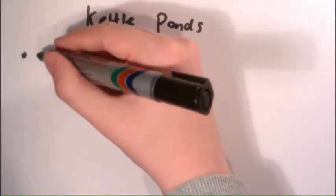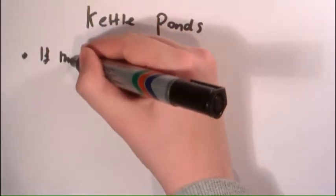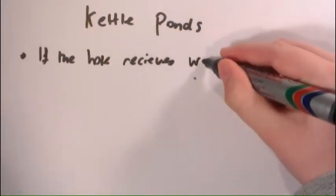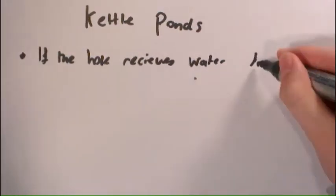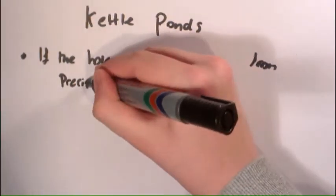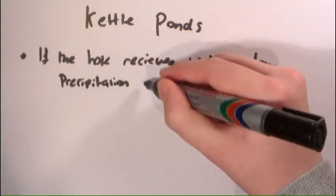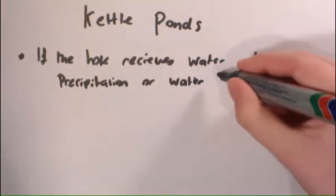If the Kettle is fed by precipitation, the groundwater table, or a combination of the two, it is termed a Kettle Pond.